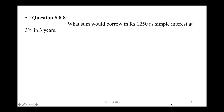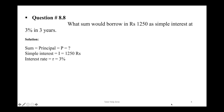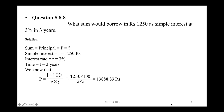Next question 8.8. What sum would earn Rs. 1250 as simple interest at 3% in 3 years? The simple interest is Rs. 1250 and we need to find the principal. The formula for principal is: P = I × 100 ÷ (R × T). Putting in the values, the answer is Rs. 13,888.89.